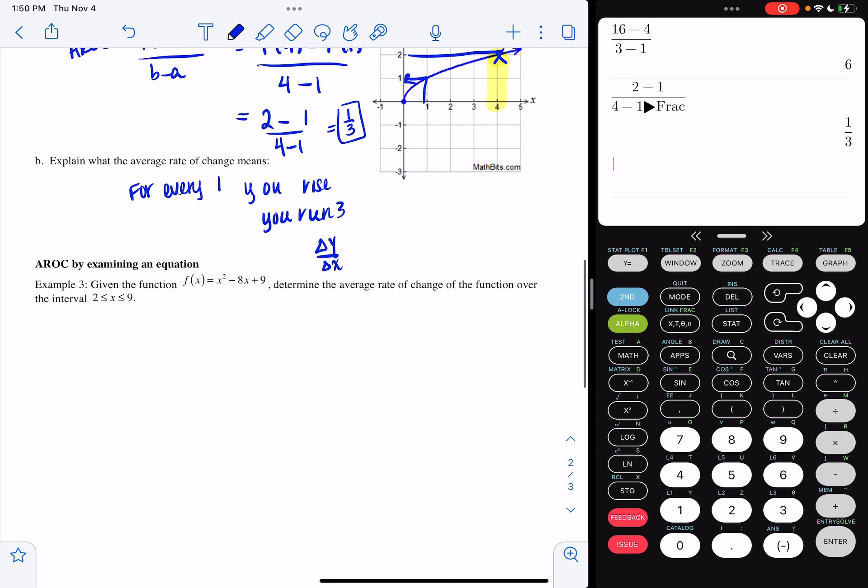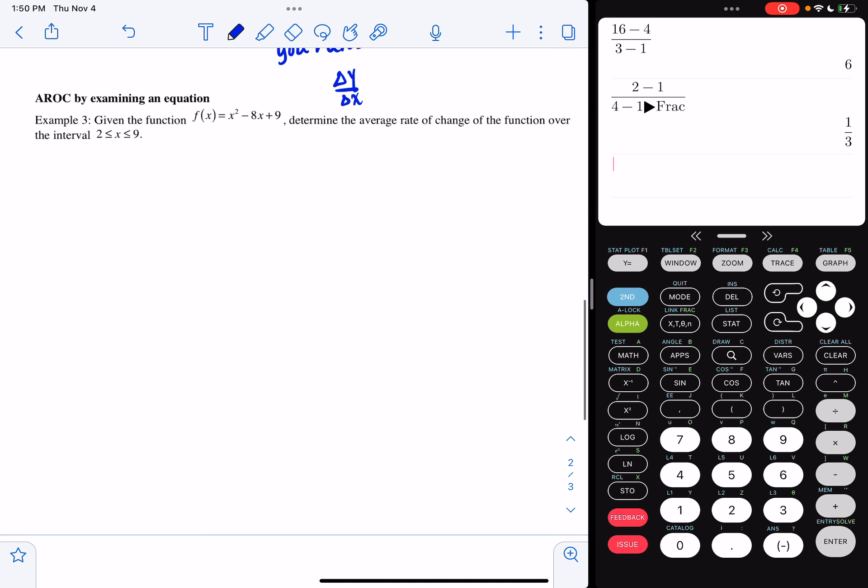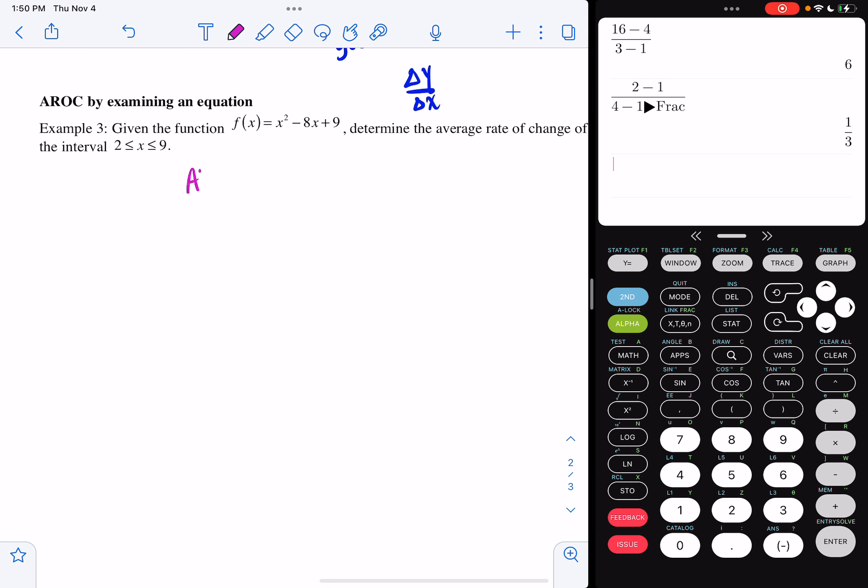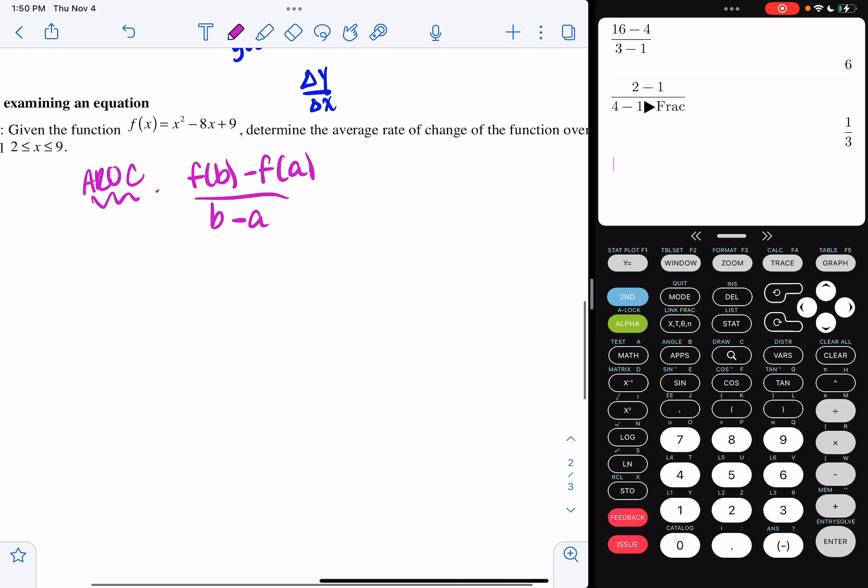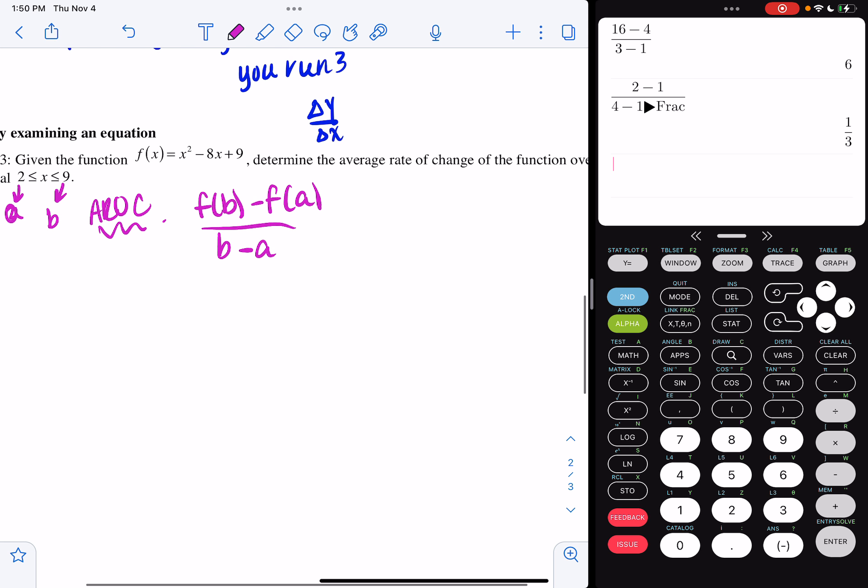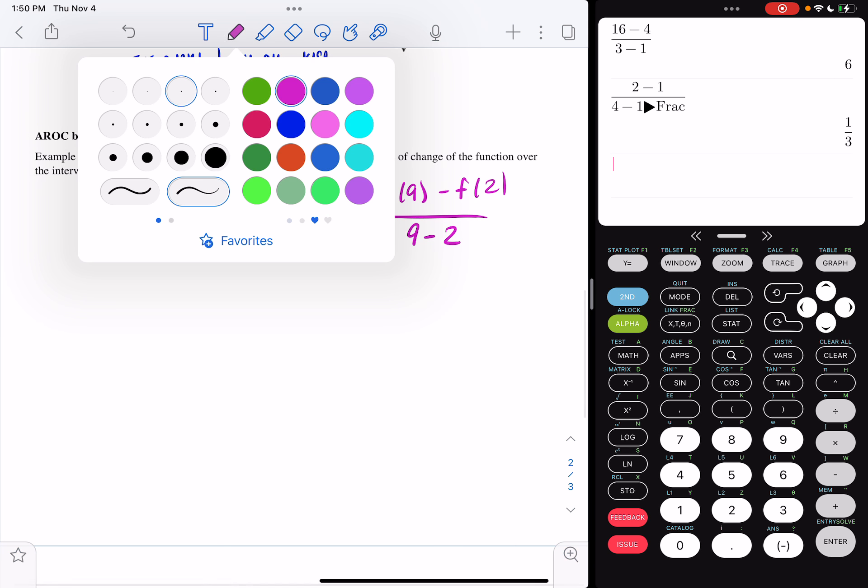AROC by examining an equation. These are a little longer because there's a lot more work you have to do. So given the function f of x equals x squared minus 8x plus 9, determine the AROC of the function over the interval 2 less than or equal to x less than or equal to 9. So what that means is we want to do f of b minus f of a over b minus a. So how that would work is our a value is 2 and our b value is 9. So what that means is we want to find out what f of 9 is, f of 2 is, and then we want to find out what 9 minus 2 is.